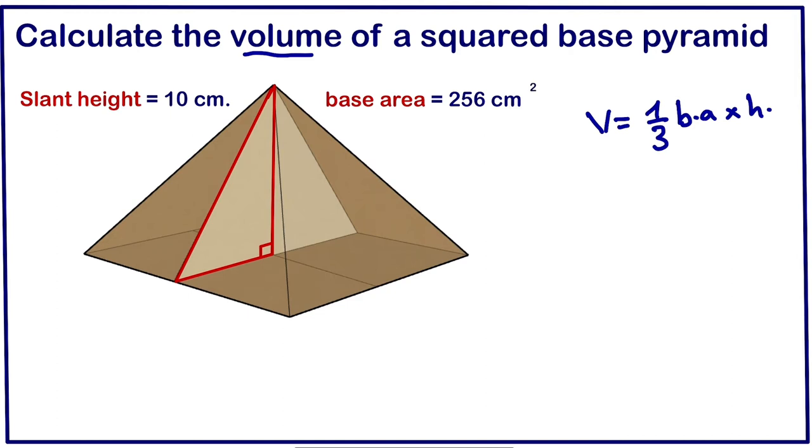This implies they gave us the base area, but we don't have the height. They gave us the slant height. So let us calculate the height. In order to calculate the height, they gave us the slant height which is 10 centimeters.